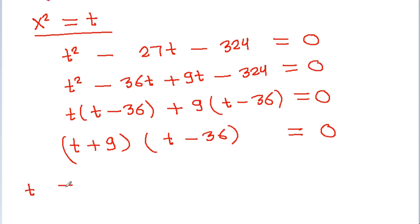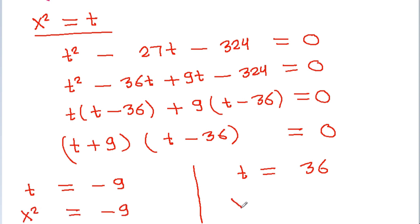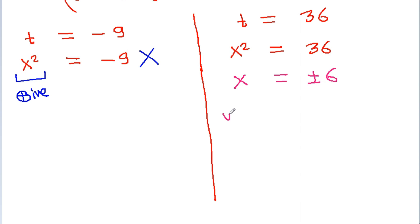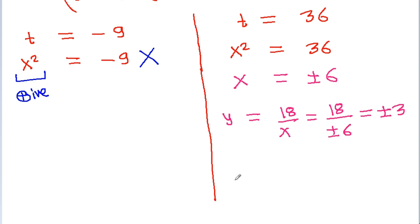So t equals 36 or t equals minus 9. Since t equals x squared must be positive, we take x squared equals 36, giving x equals plus or minus 6. Then y equals 18 divided by x; if x equals minus 6, y equals minus 3, so x plus y equals minus 9. If x equals 6, y equals 3, so x plus y equals 9.